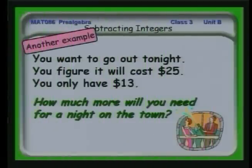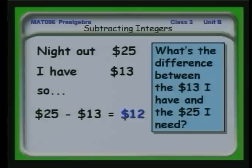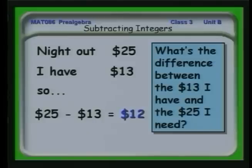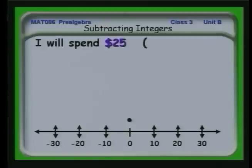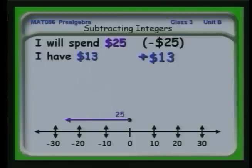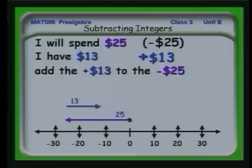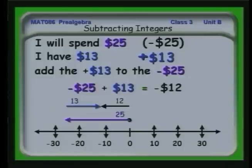You want to go out tonight. You figure it'll cost $25. You only have $13. How much more will you need for your night on the town? We've done it before: 25 minus 13, and the difference is $12. On the number line, I will spend $25, which means ultimately I will be in the hole $25, or spend minus $25. I have $13, so I have plus 13. Adding 13 to minus 25, I get minus 12, or I would be $12 in the hole.